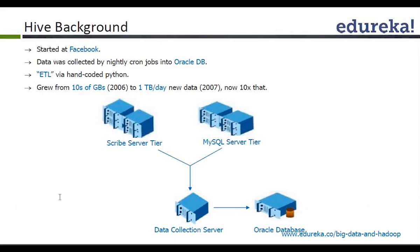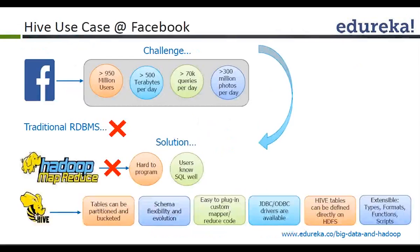Whenever you want to do any semi-structured data, you'll have to use PIG, and structured data goes into Hive — that's a thumb rule you'll have to follow. The challenge with Facebook was that they had 950 million users, 500 terabytes of data per day, more than 70,000 queries, and more than 300 million photos being uploaded.